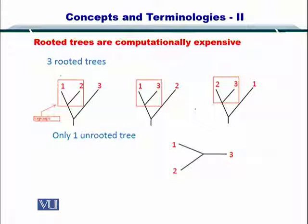For instance, rooted trees are computationally very expensive because one rooted tree can be represented in multiple forms. However, the unrooted tree can only be represented in a single form.